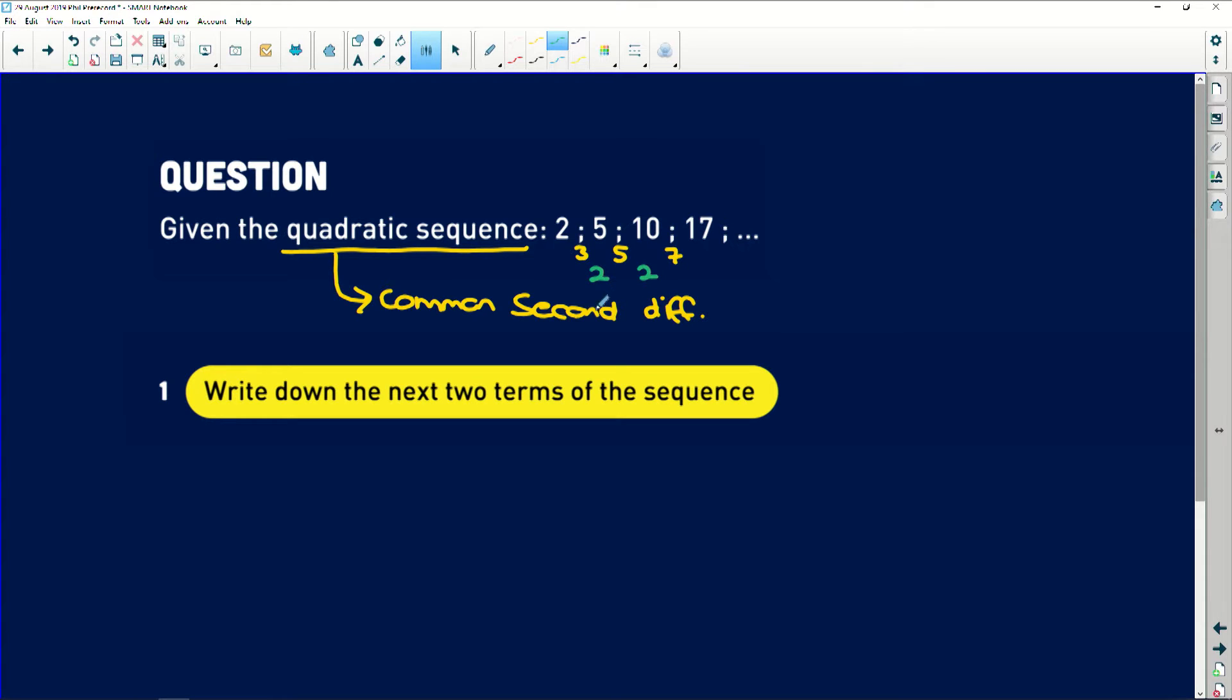And then if you find the second difference, you find the difference between these differences. So you're going to have 2, 2. That 2 is going to stay constant as a second difference. That's what the quadratic sequence means.